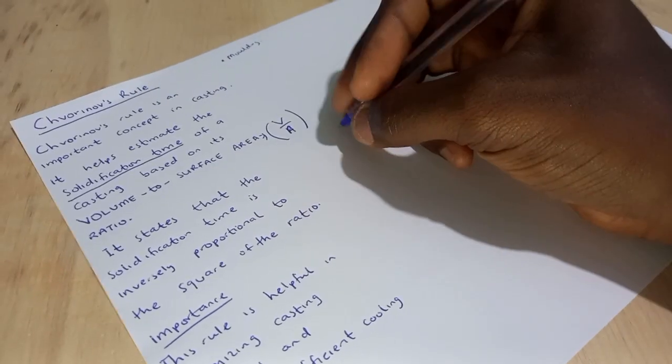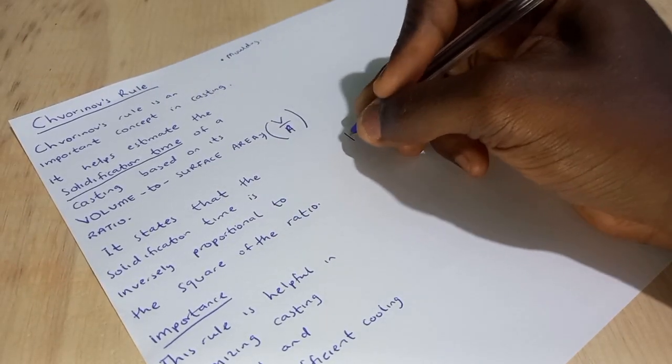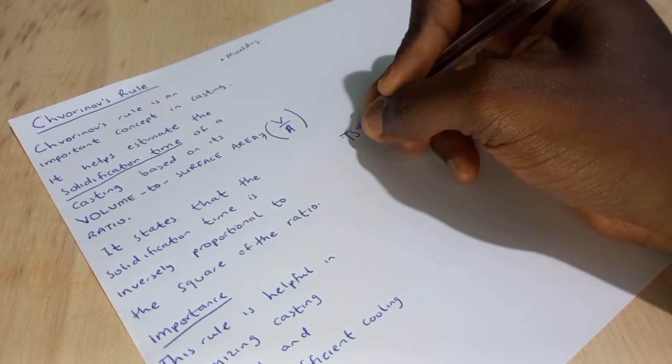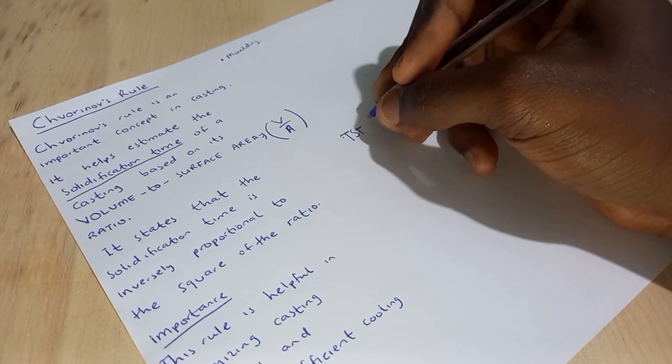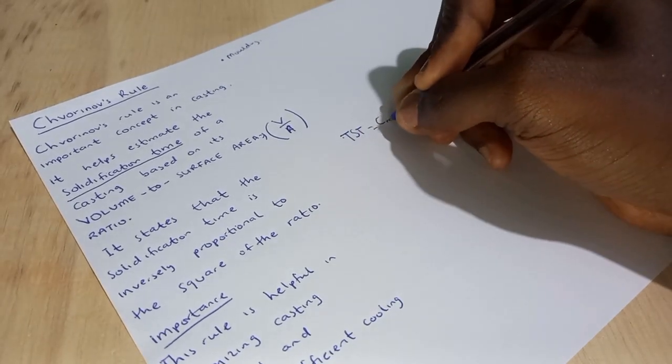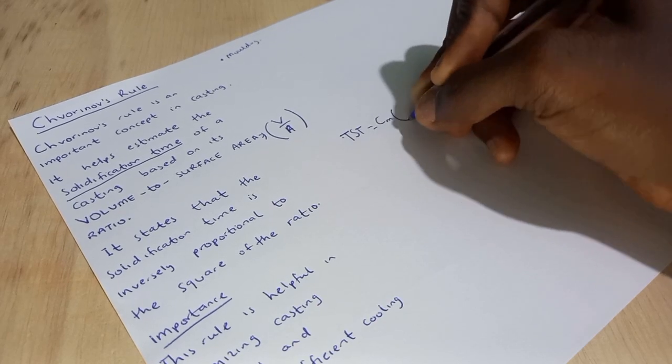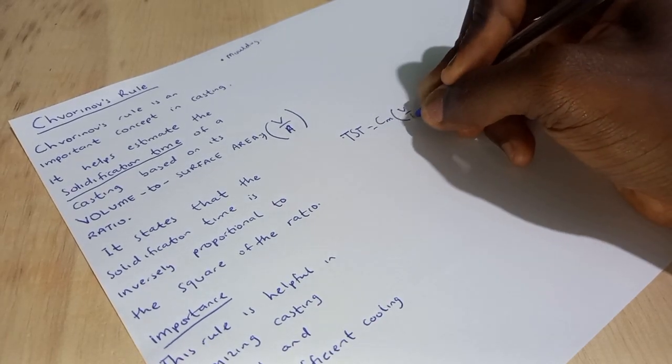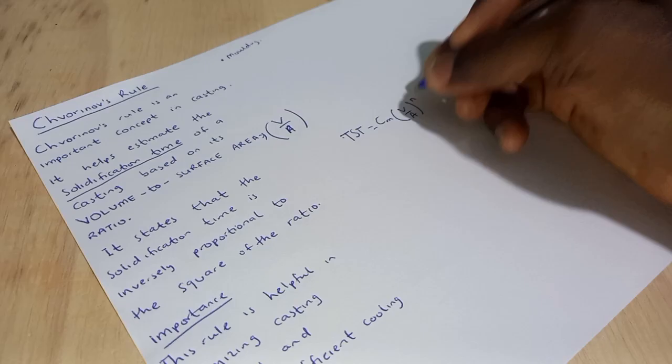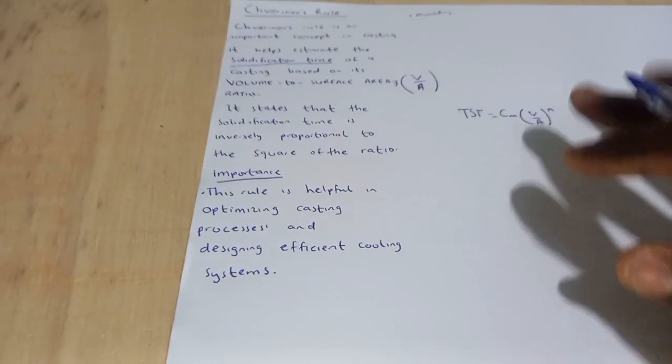So we have this to be: the total solidification time is equal to the mold constant. Let's go to there.